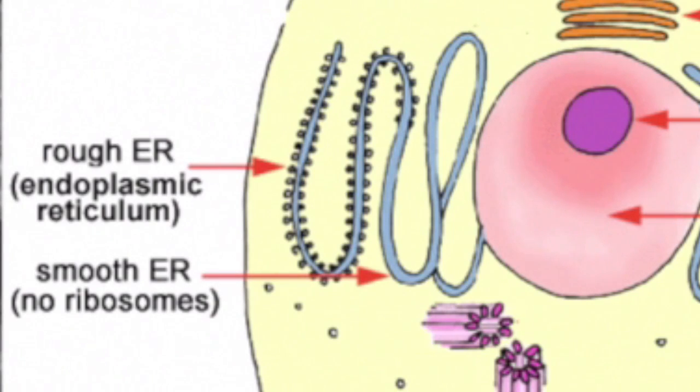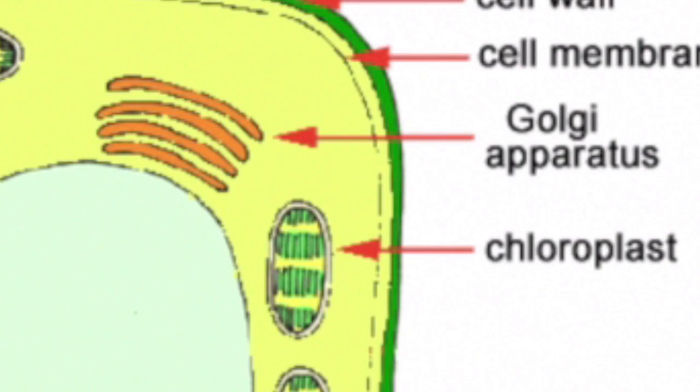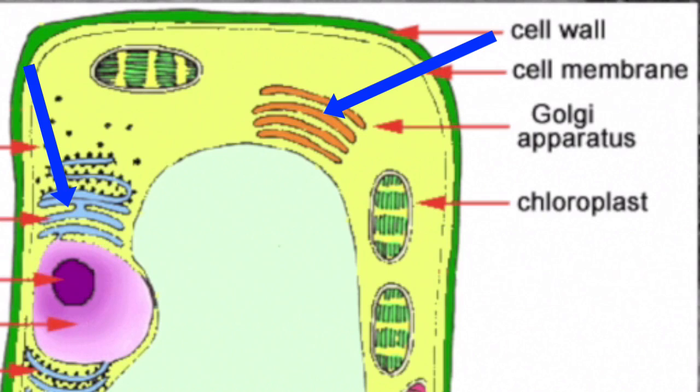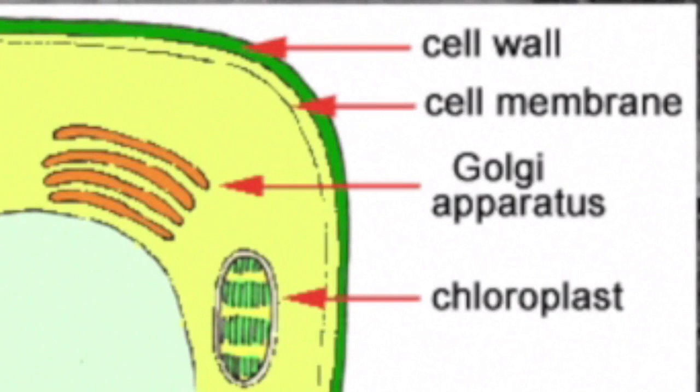Next is Golgi apparatus. The structure looks very like the ER. The difference in the structure is that the Golgi apparatus does not have ribosomes. The function is to store, collect and transport materials.